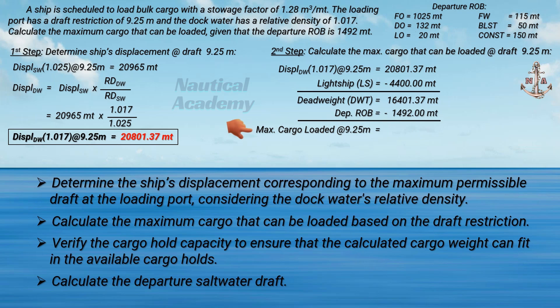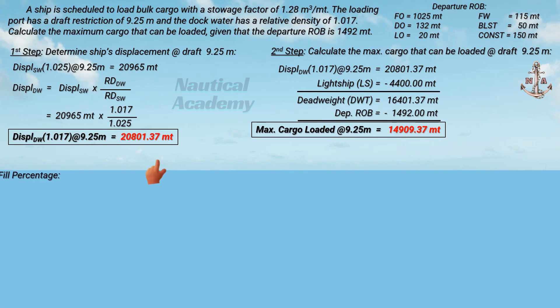The maximum cargo that can be loaded in the loading port, considering the draft limit at 9.25 meters, is 14,909.37 metric tons. Next, let's calculate the fill percentage to determine if the calculated maximum cargo can all be loaded in the ship's cargo holds.